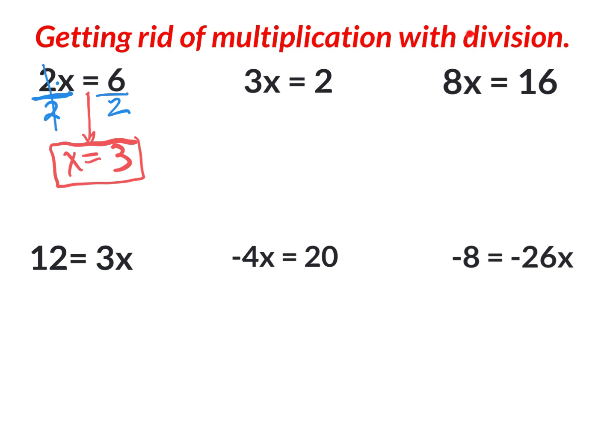Here's another detail: just because you're multiplying by two, when you divide by two — and what you do to one side you do to the other — you might not actually be able to divide these evenly, and that's okay. That just means you have a fraction as an answer, and that's exactly what happens on this next one.